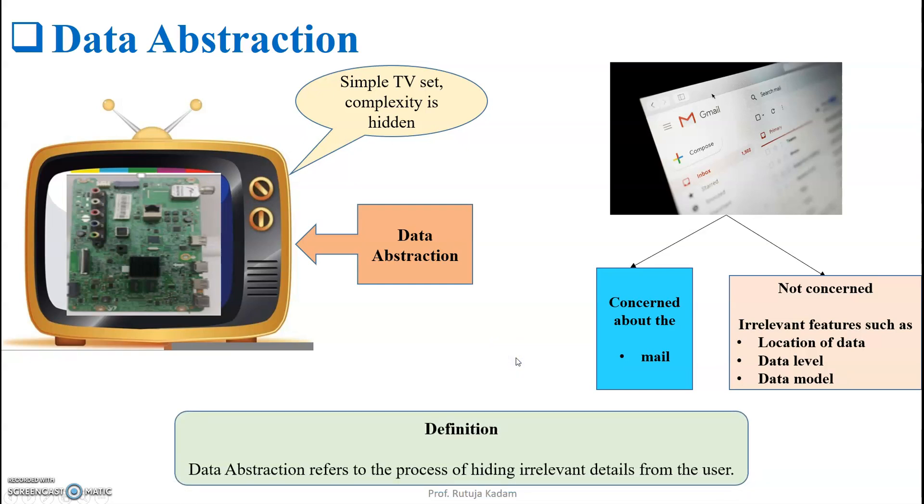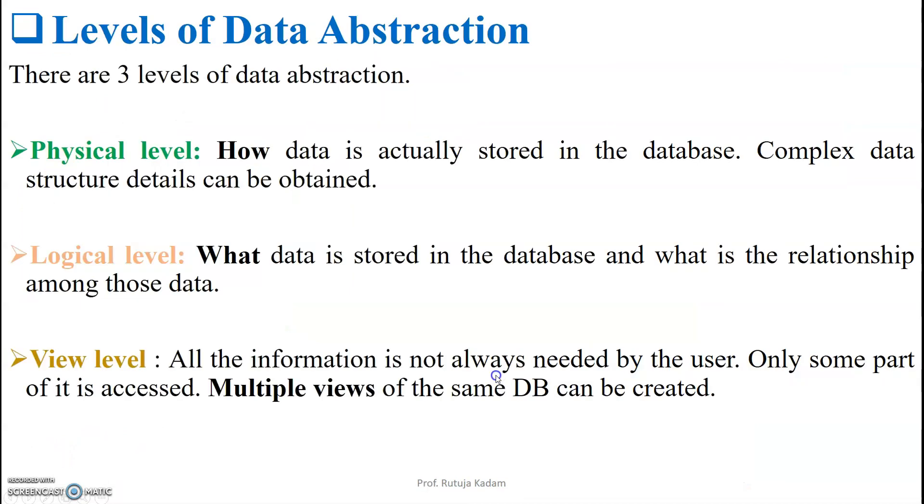Let us look at the definition of data abstraction. It refers to the process of hiding irrelevant details from the user. Now let us go to the levels of data abstraction. There are three levels: physical level, logical level, and view level.